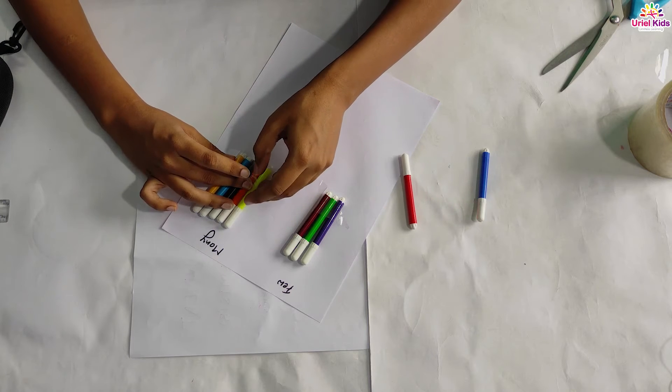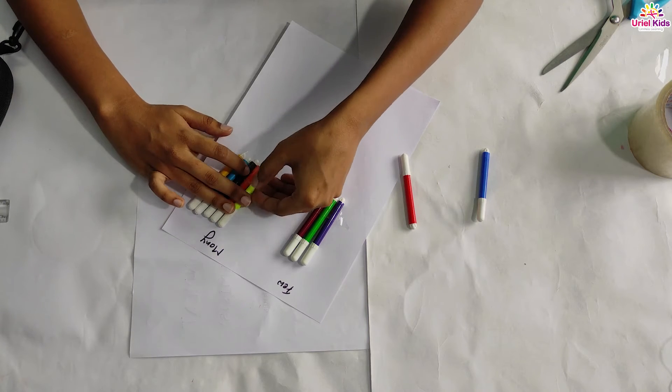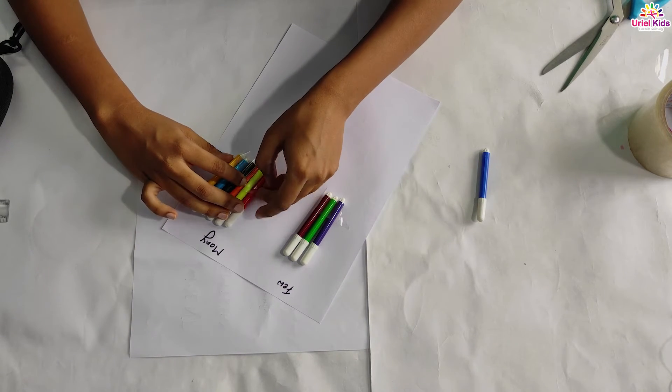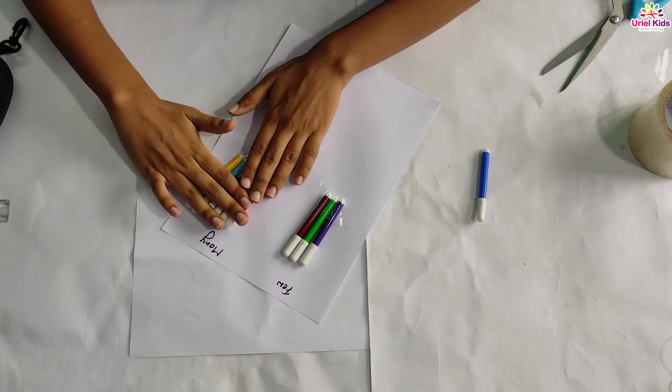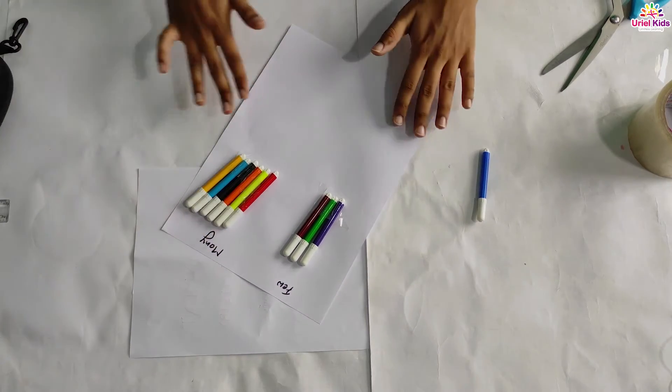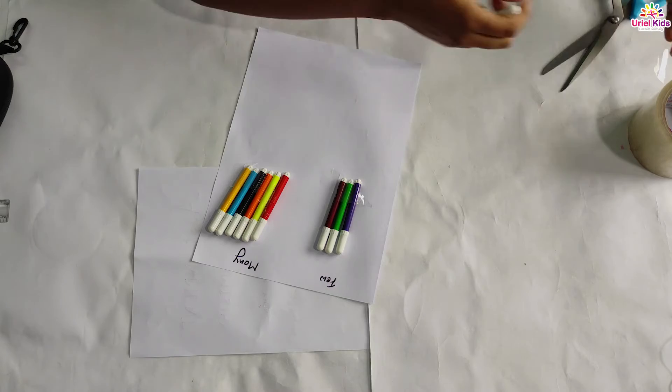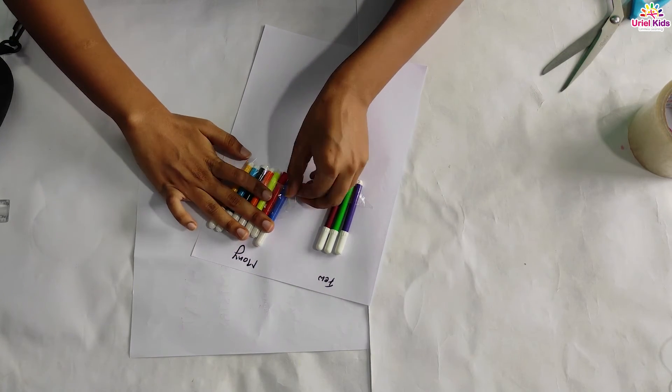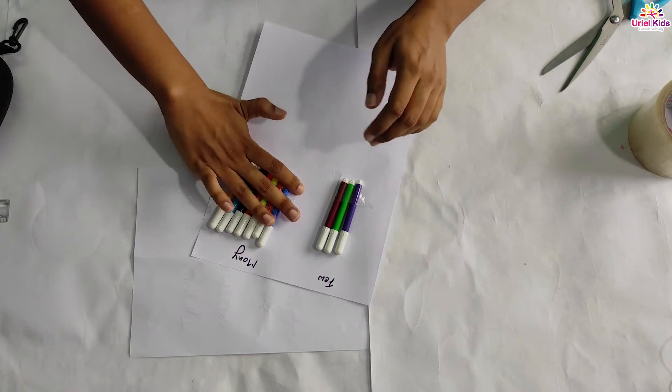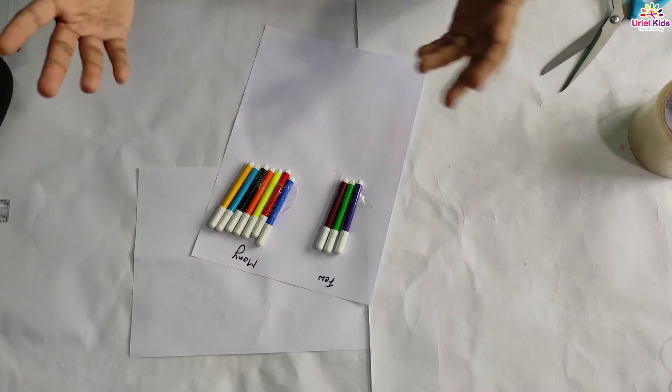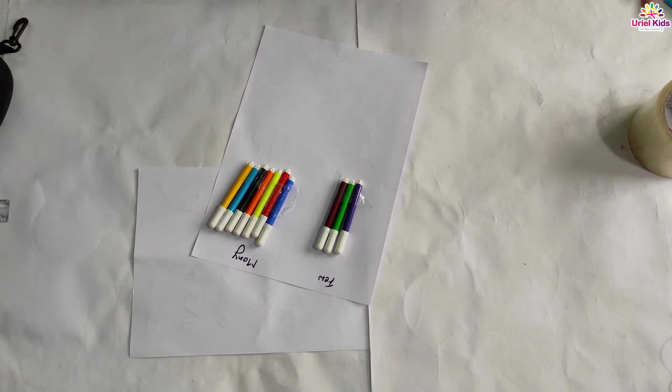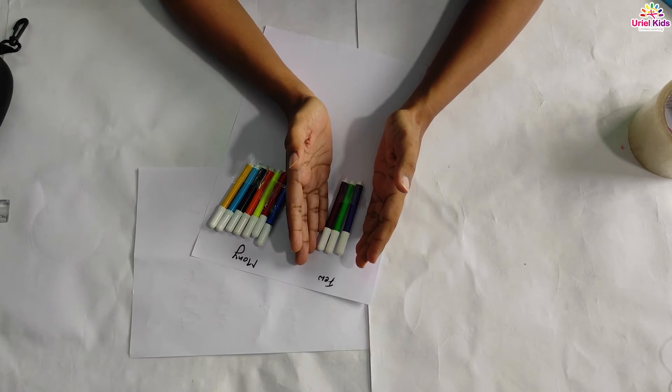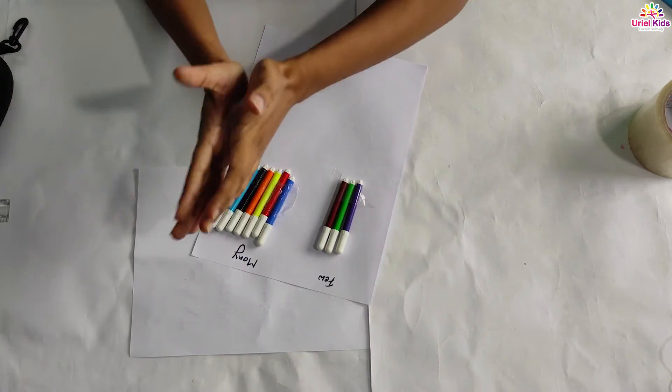So now, by seeing and by having our knowledge of few and many, tell me which of the column is few and which of the column is many. So here if you want, you can put this also, so it will be like this. Okay, so now tell me, this is my few column and this is my many column. How you can say that? Yes, by just observing you are able to see that here the number of sketch pens are less, so they are few. And here so many sketch pens are there, so they are many.